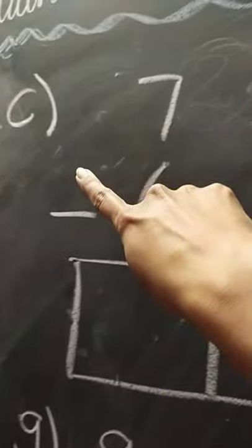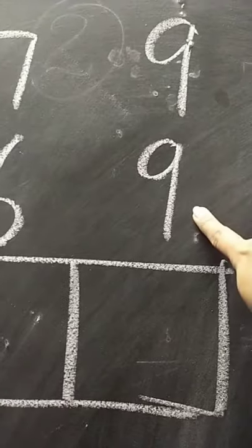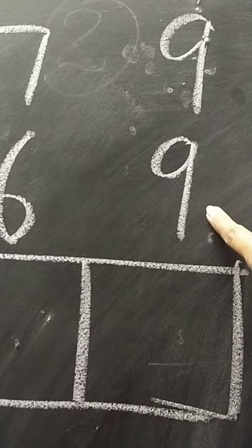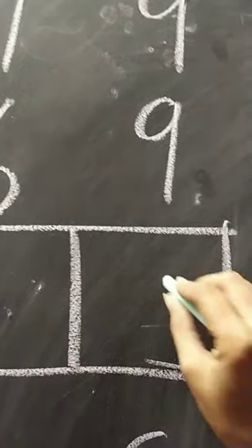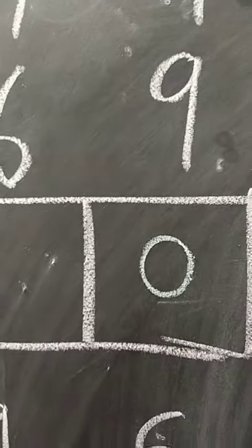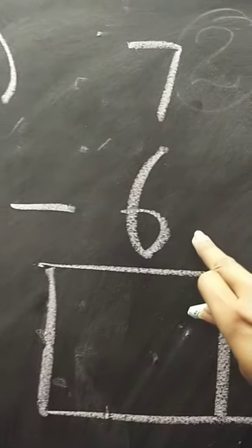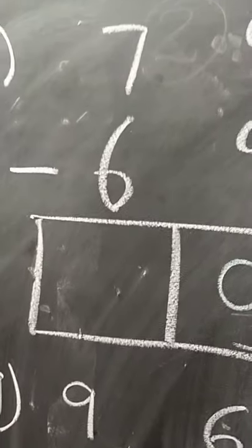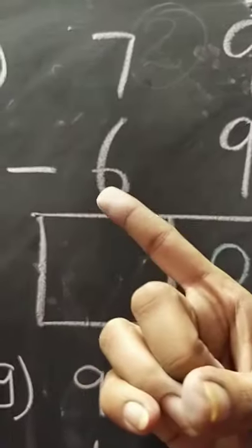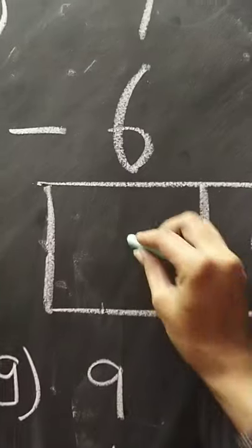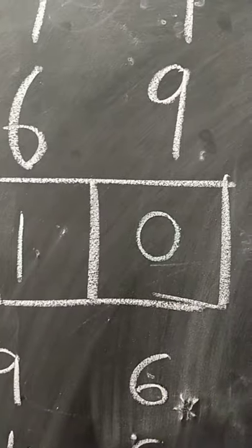C. 9 minus 9 — both the numbers are the same, so if we subtract 9 from 9 then we are left with nothing. It will be 0. Then, 7 minus 6. What comes after 6? 7. So, 7 minus 6 will be 1. The answer here we got is 10.